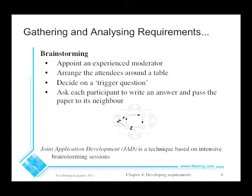In this video, we're going to continue to talk about Requirements. The third technique is brainstorming. The idea here is you get a bunch of people around a table — somewhere between 3 and 15 people often works best. You pick what's called a trigger question. The trigger question might be: what are the most important features for this new system, or how are we going to deal with a particular problem or issue?